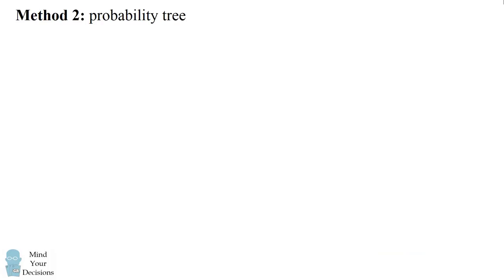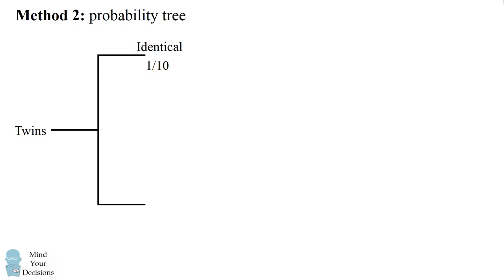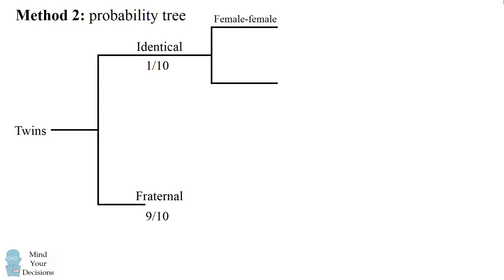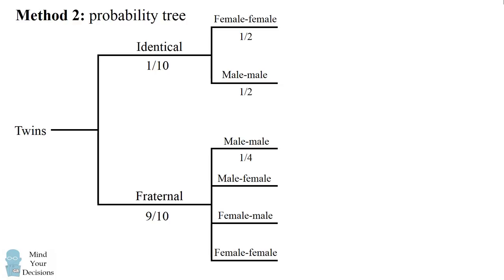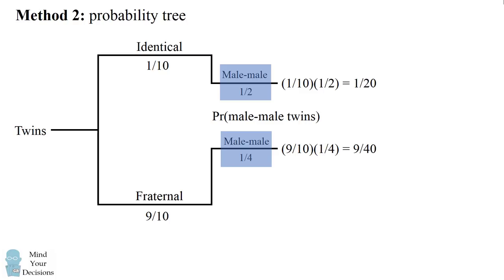Another way we could solve this problem is to write a probability tree. Twins can either be identical or fraternal. Identical twins can either be female-female or male-male with equal probability, and fraternal twins can be any of the four gender pairings with equal chance. Now we're only concerned with twin brothers, so we only want to focus on these two branches. The probability of identical twin male brothers is 1 out of 10 times 1 half, which equals 1 out of 20. Fraternal twin brothers will be 9 out of 10 times 1 over 4, which is 9 over 40. So the total probability of male twin brothers is 1 over 20 plus 9 over 40, which equals 11 over 40.